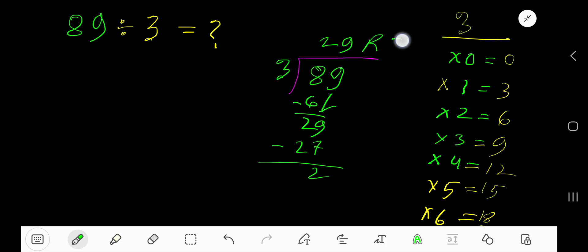So our answer is 29 remainder 2. But if we want to write our answer in decimal form, then convert this number into a decimal number first. You can add any number of zeros. Bring down the first zero. Before this zero there is a decimal. The decimal must come to the quotient directly.